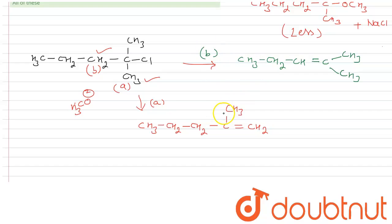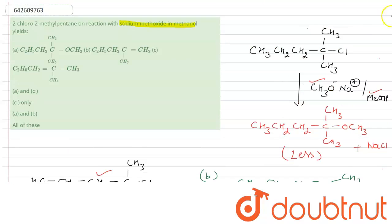We can see that all the products are possible through this reaction when using a strong nucleophile in polar solvent. The elimination products are in more yield, but the substitution product also forms. Checking the options — all of these products are possible, so option D, 'all of these,' is the correct answer. Hope this solved your question.